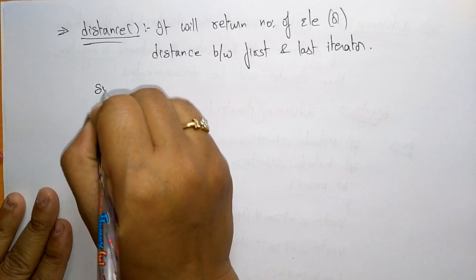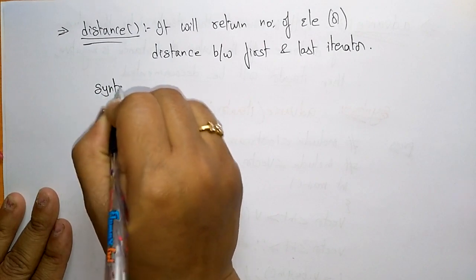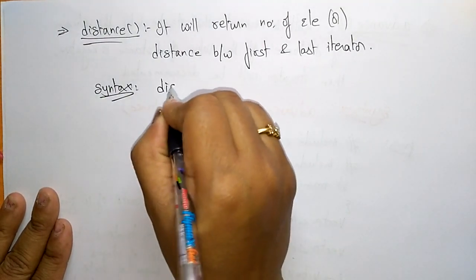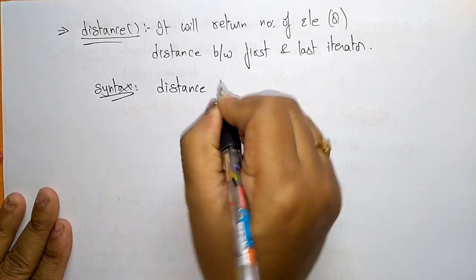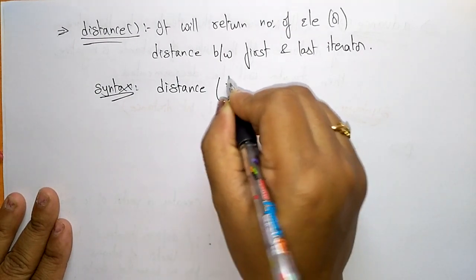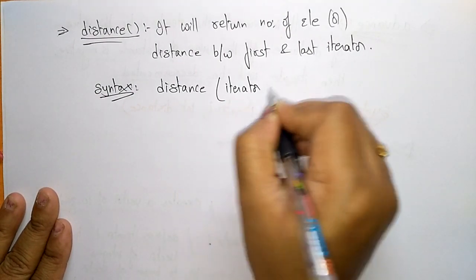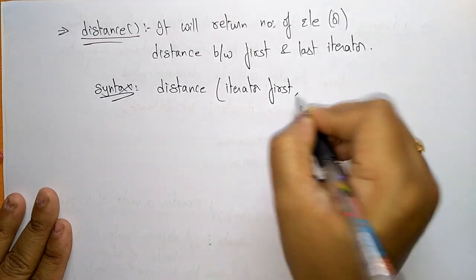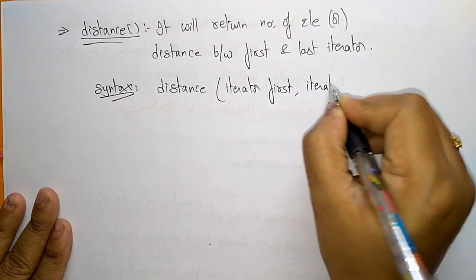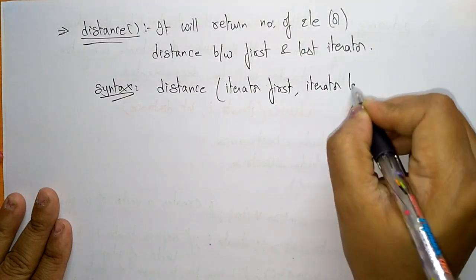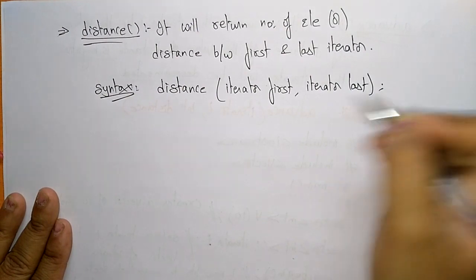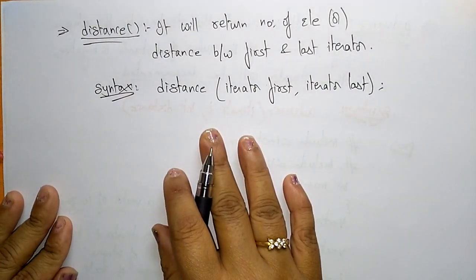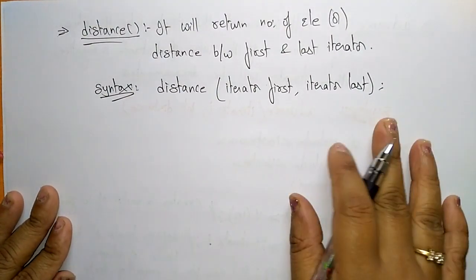The syntax for this distance operation is: you write the function name distance, then iterator first, iterator last. That's it — this is the syntax for the distance operation.